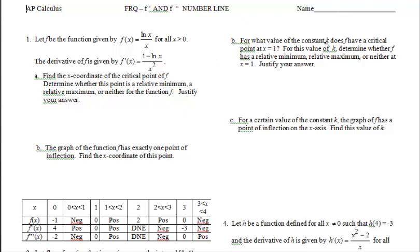For what value of the constant K does the function have a critical point at x equals 1? If I have a critical point at x equals 1, that tells me in notation that f prime of 1 equals 0. So my plan is find my derivative that I just found, plug in 1 for x, set it equal to 0, solve for K.